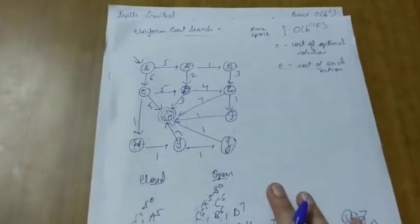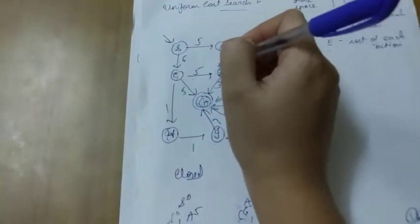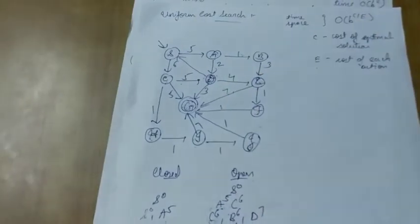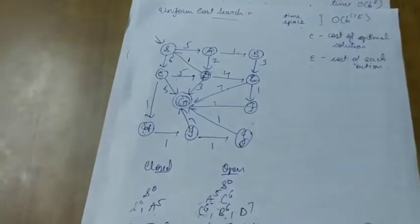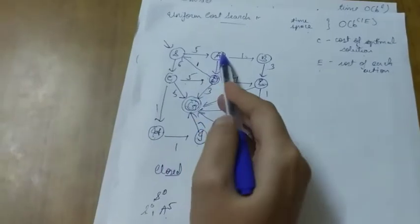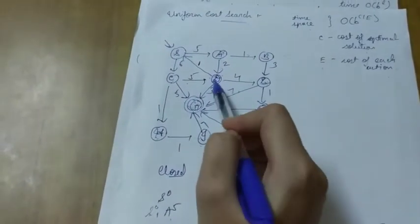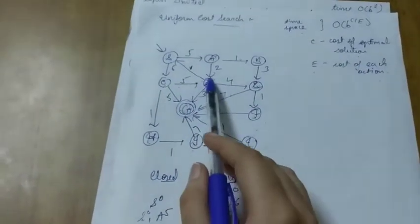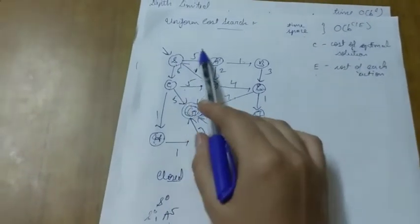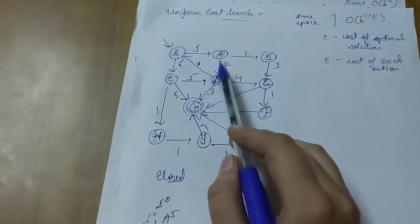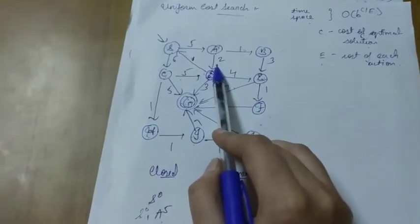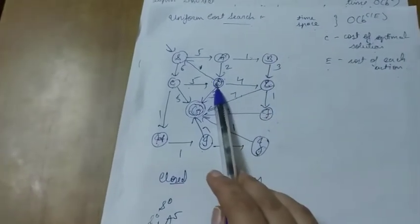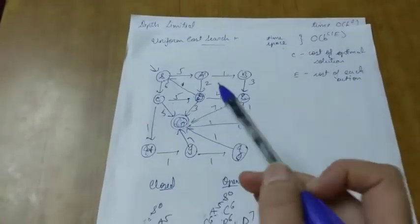Now consider a special case: assume there is a path from D back to S with cost 1. Then S goes to A, A finds D, and D finds S again with a minimum value. These steps repeat infinitely, causing an infinite loop from which the algorithm can never escape. This is the main disadvantage of uniform cost search.